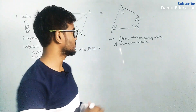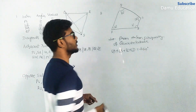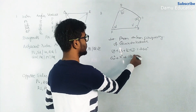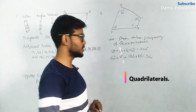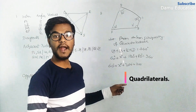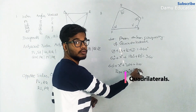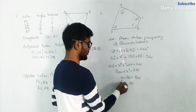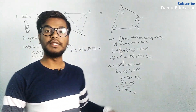So angle E plus angle B plus angle C plus angle D equals 360 degrees. Angle E is 60 degrees, angle B is x degrees, angle C is 120 degrees, and angle D is 80 degrees. So 60 plus x plus 120 plus 80 equals 360 degrees. That gives 260 plus x equals 360 degrees, so x equals 360 minus 260, which is 100 degrees. Therefore angle B equals 100 degrees.